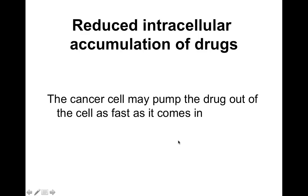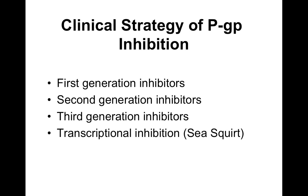The cancer cell may pump the drug out of the cell as fast as it comes in — we don't want this to happen because we're dosing a patient with anti-cancer drugs to kill the cancer cells. If the cancer cell is pumping out the drug through P-glycoprotein, then that cancer cell is surviving and is not being killed. Therefore, you need to inhibit the functioning of these efflux pumps so they can no longer efflux anti-cancer drugs out of the cell.